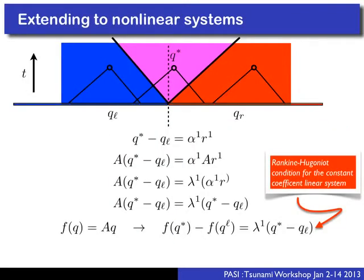Now we work our way into the nonlinear problem, where life is not quite so simple. For the nonlinear shallow water equations, Q is H and momentum HU, and F(Q) is the corresponding nonlinear flux. For smooth solutions we can rewrite this as F'(Q) * Q_x, where F' is the flux Jacobian matrix. This plays the role of our constant-coefficient matrix, but now eigenvalues depend on u and h — they depend on our solution.